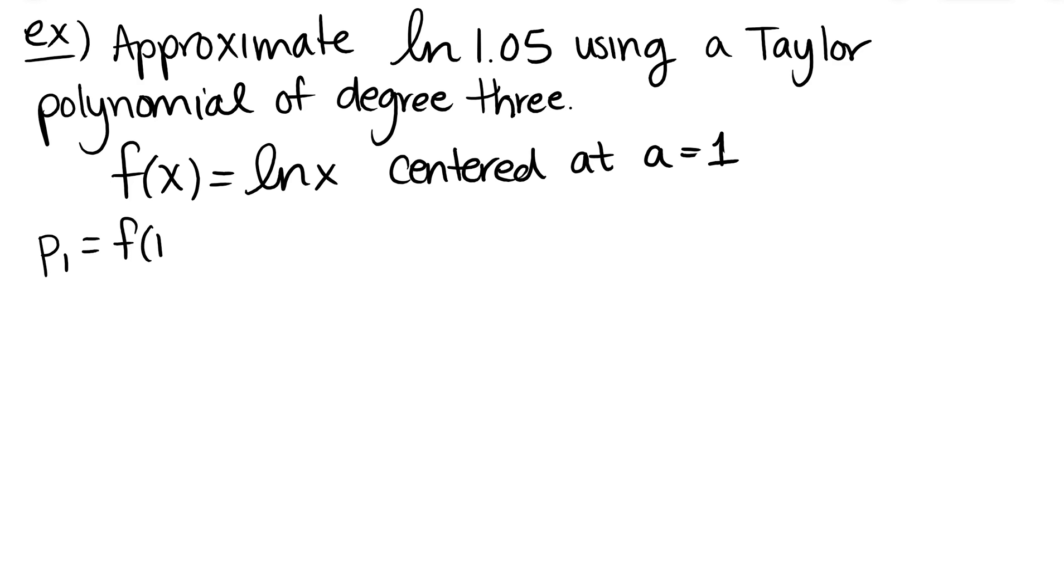So what do I know? I know P sub 1 is going to be f of 1 plus f primed of 1 times x minus 1. Actually, I don't even need P1. It says of degree 3. So let's go straight to degree 3. There's my P sub 1. And then remember to get P sub 2, I would add on f double primed evaluated at 1 over 2 - no, don't do that - over 2 times x minus 1 squared. And then finally for order 3, this is f triple primed of 1 - oh, don't do that - there we go, all over 3 factorial times x minus 1 cubed.